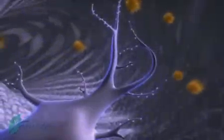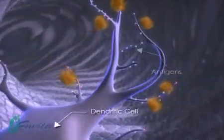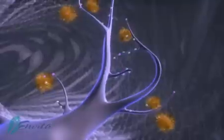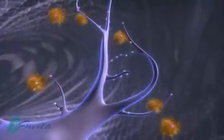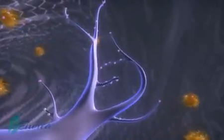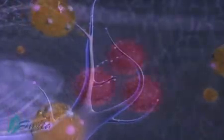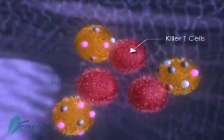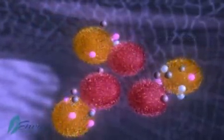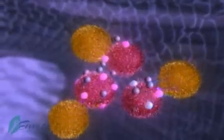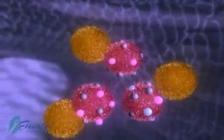The helper T cells come along and pick up the processed antigen off of the dendritic cell. Then the helper T cells proceed to pass the antigens along to another portion of the immune system called the killer T cells. The job of the killer T cell is to hunt down the spirochete infection and eliminate it by using the antigens to identify the Lyme disease.